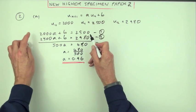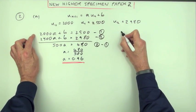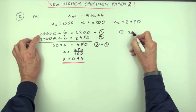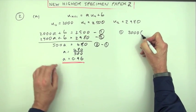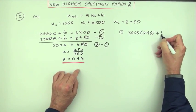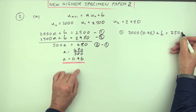And once you know what A is, you can pop it back into 1. So using number 1 then, you've got 2,000 multiplying 0.96 plus B should produce 2,500.